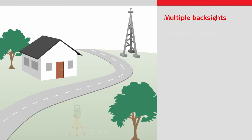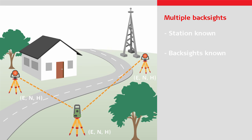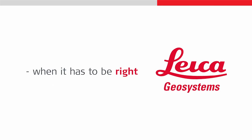In summary, the multiple backsights method is the method to use when you know the point over which you will position the total station and you have one or more target points to which you know the coordinates. Based on these measurements, the orientation and, if desired, the height of the total station can be computed. Please do watch the other videos to learn more about the individual methods. Thanks for watching.